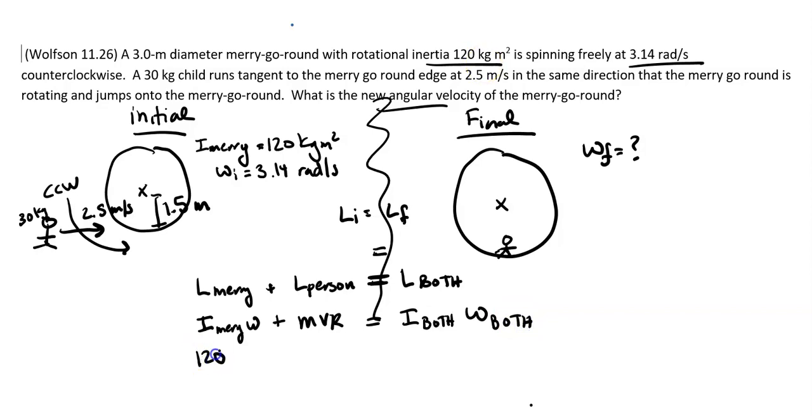Cool, so now let's see what we can plug in. Merry-go-round is 120, omega for the merry-go-round is 2.5. Plus, mass of the child is 30, linear velocity is 2.5, and the radius is 1.5.